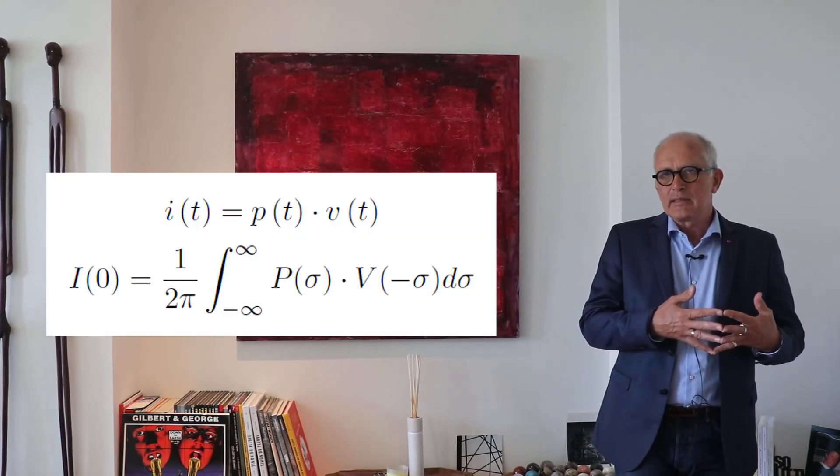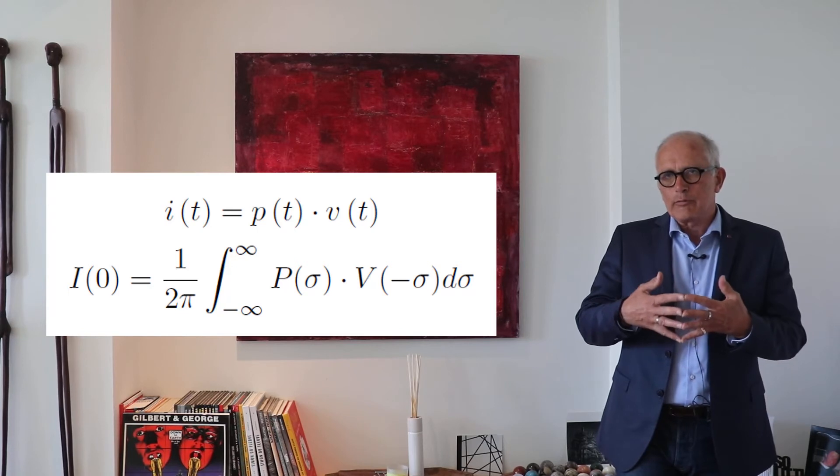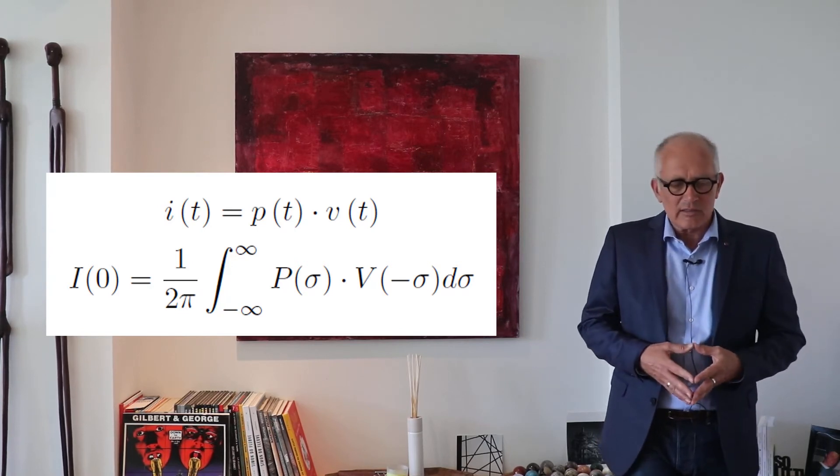The use of one-sided spectrum has some importance in the way we define and calculate active intensity. In this presentation, a few slides before, I have said that instantaneous intensity is the product of the pressure signal and the velocity signal.